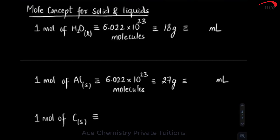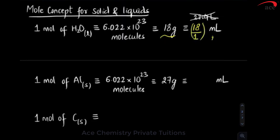For mole concept applied to solids and liquids: one mole of H₂O liquid has Avogadro's number of molecules and a molar mass of 18 grams. We cannot write 22.4 litres because it is liquid — that is only for gas. To find volume, take the mass and divide by density. Density of water is 1, so the volume is 18 ml. So one mole of water is NA molecules, 18 grams, and 18 ml.